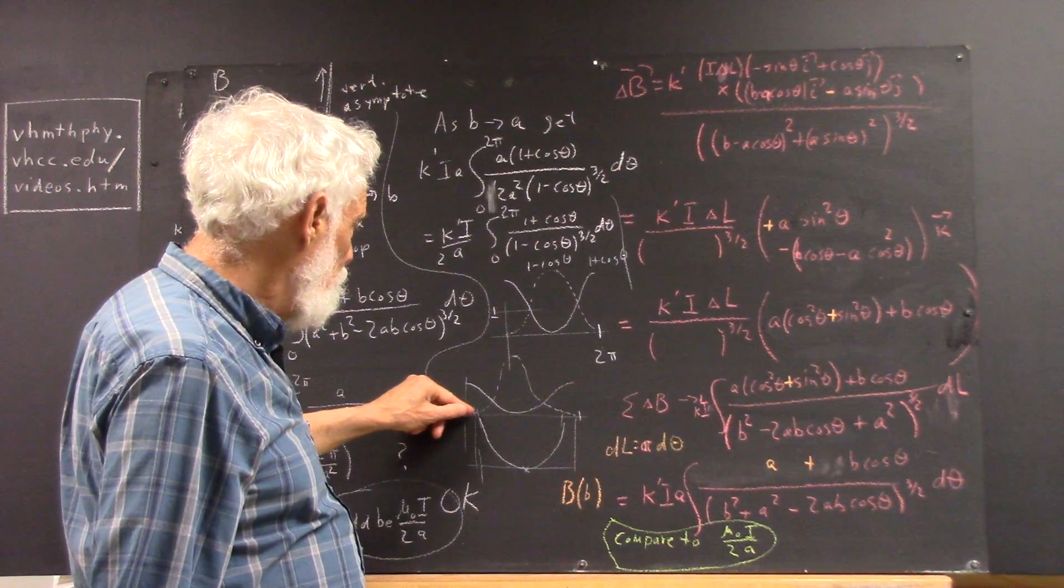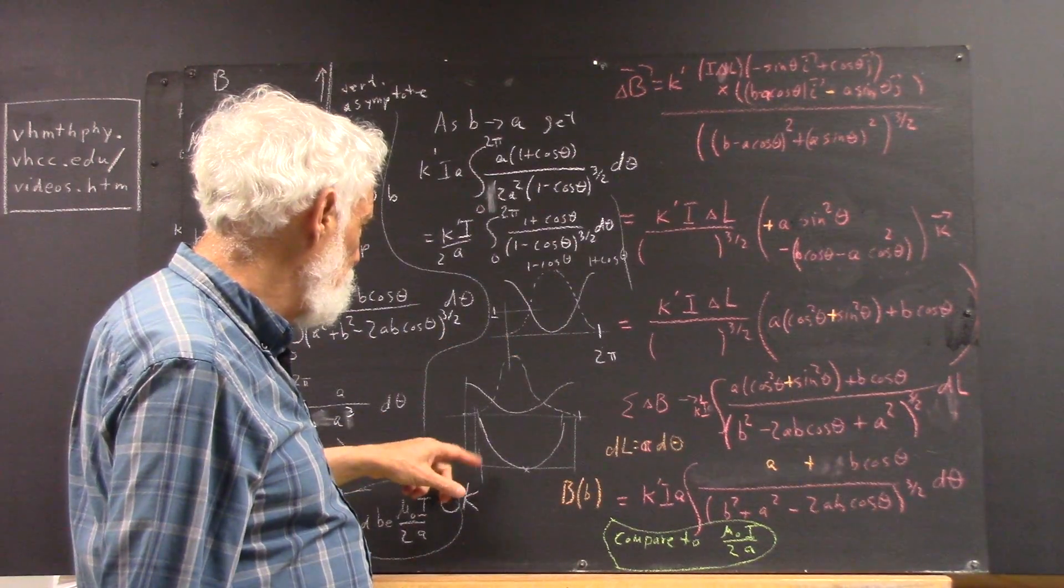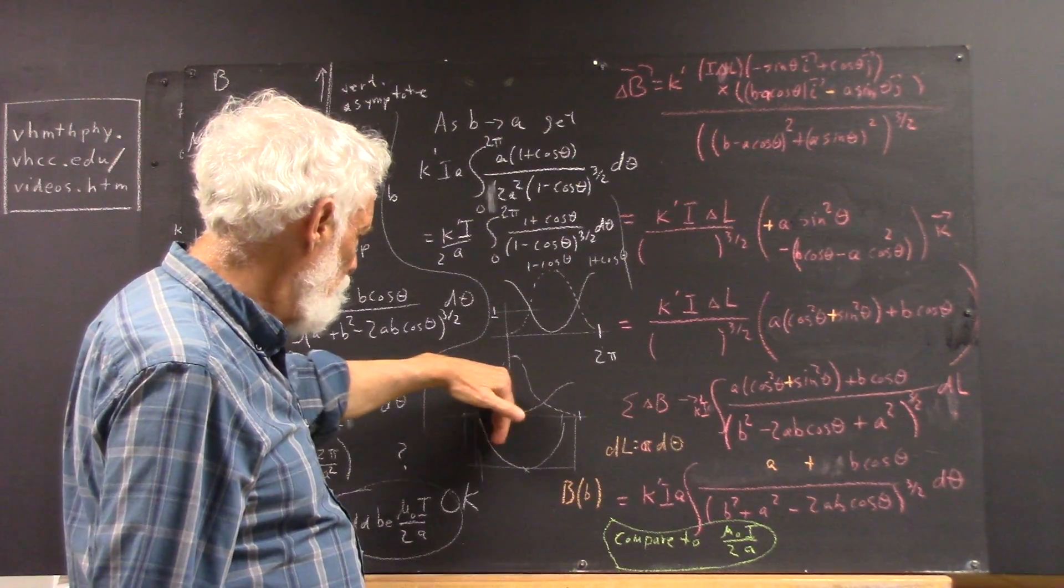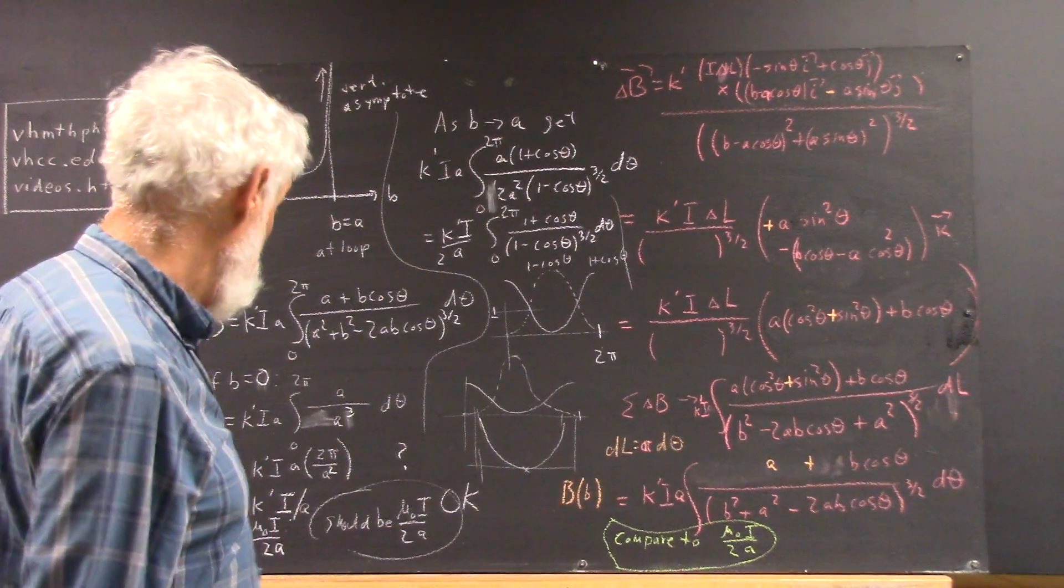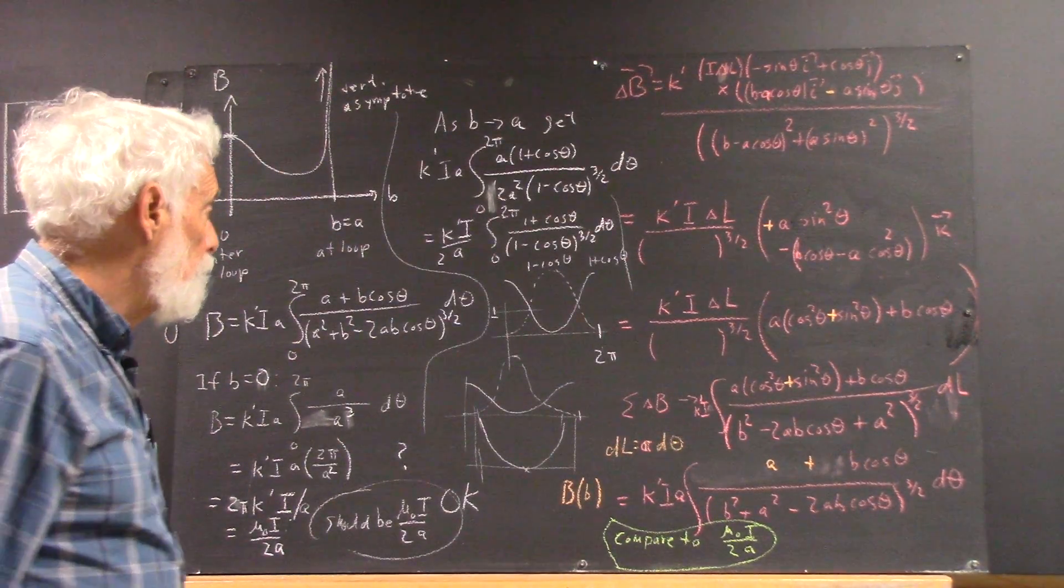The fact that this thing stays flat longer than it gets sharp up here tells me that it's going to have quite a bit of space between here and the asymptote, so I tend to believe that it's going to be infinite, and of course it needs to be, but I'm not seeing that.